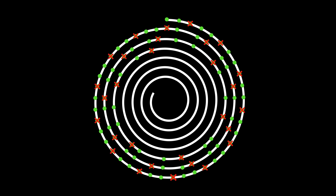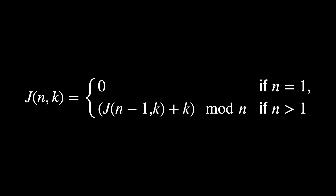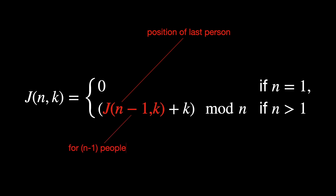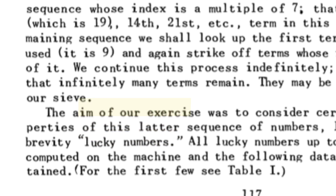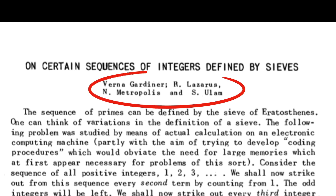The position of the last survivor, j(n,k), in a circle of n people with step k can be calculated using a recursive formula. Here, j(n-1, k) calculates the position of the last person left for n-1 people, and adding k accounts for the step rate, with modulo n ensuring that the counting wraps around the circle correctly. The term lucky numbers was introduced by Gardiner, Lazarus, Metropolis, and Ulam in 1956. They also suggested the idea of the "Sieve of Josephus Flavius" as the name because of the similarities.